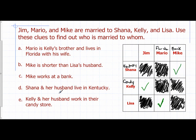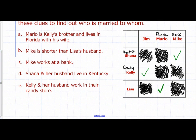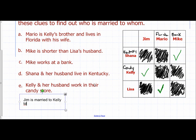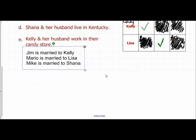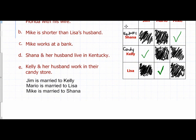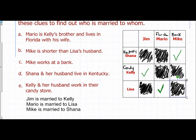That means Mike and Shayna are married. So the final answers are: Jim is married to Kelly, Mario is married to Lisa, and Mike is married to Shayna. By setting up a logic matrix and filling in what we know while crossing out what doesn't fit, we can solve logic problems — it's an interesting application of matrices.